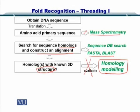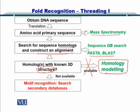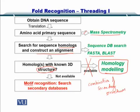This is the precise condition in which we go for fold recognition or threading. What we do is recognize the motifs — that is, the combination of secondary structures. This is a motif. And you search the database of secondary structures, which helps you to perform fold assignment.